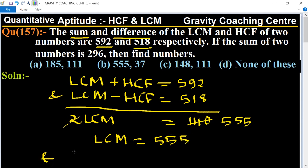And HCF equal to 592 minus 555 equal to 37.